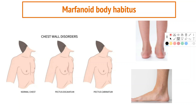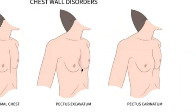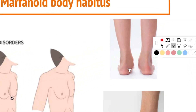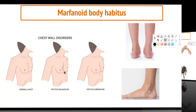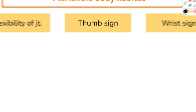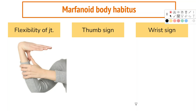Rib overgrowth can cause pectus excavatum, where the chest goes inward, or pectus carinatum, where the chest points outward. Other common skeletal manifestations include hindfoot valgus or pes planus. Patients also have long thin fingers and toes, which is called arachnodactyly, a reference to the long legs of spiders.